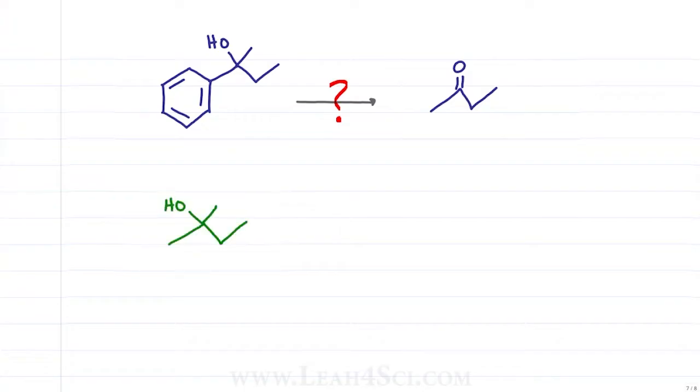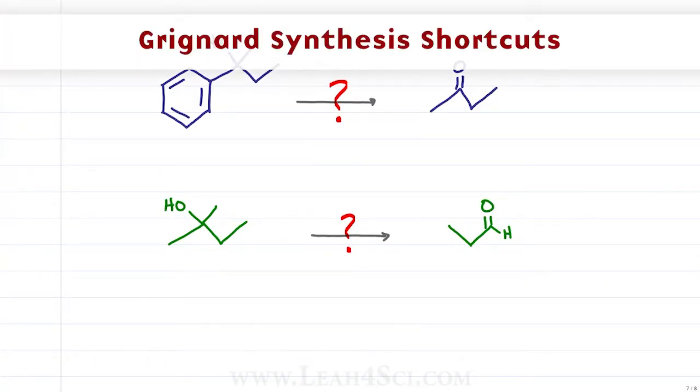Say you're asked to synthesize this monstrosity from 2-butanone or this molecule from propanel. There are many ways to approach it but in this Leah4Sci video, we'll focus on Grignard reactions with a few key shortcuts to add to your retrosynthesis arsenal.